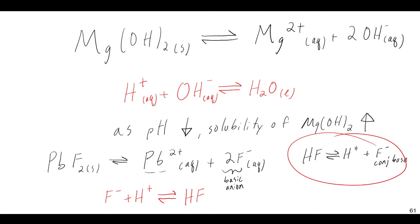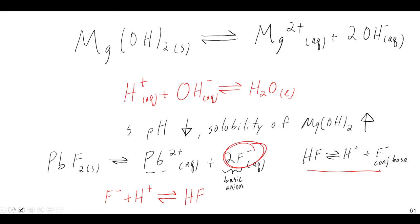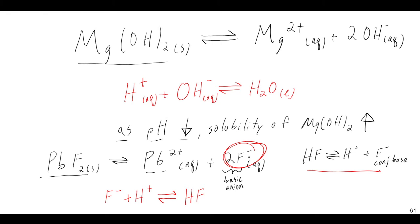So as long as this ion can combine with H⁺ to make its weak acid form — as long as it's a basic anion that accepts a proton — and you get some making of HF, then adding H⁺ will remove F⁻, shifting this equilibrium to dissolve more lead fluoride and fill that void. So adding H⁺ will still remove some F⁻ as pH decreases. The more H⁺ you have, the lower the pH. So as you add H⁺ and the pH decreases, the solubility of most anything with a basic anion will increase.